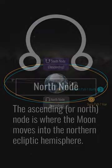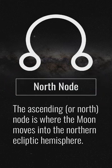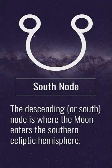There's a north node, also known as the ascending node, and a south node, also known as the descending node.